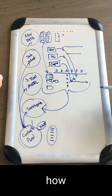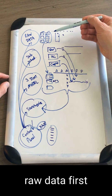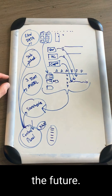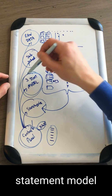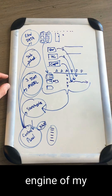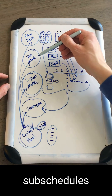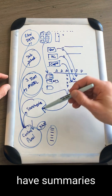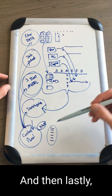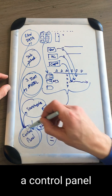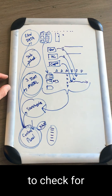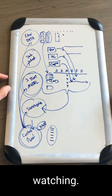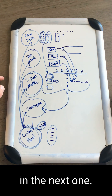That's a lot of information, but directionally here's how I think about it: I need the raw data first because I need the history before I can calculate the future. I build the three statement model because that's the primary engine. Then I build sub-schedules for line items that need more detail, summaries so I can send it to my team, and lastly, always, a control panel to check for errors — because that's the most important part. Thanks so much for watching!